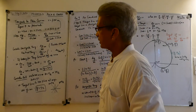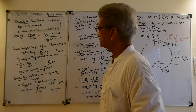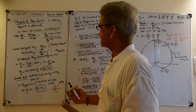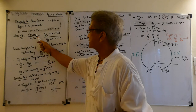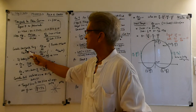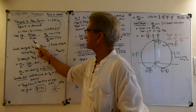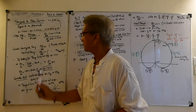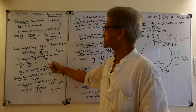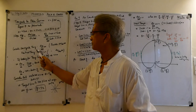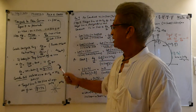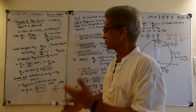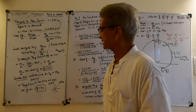Now we're going to locate the horizontal tangents and the vertical tangents. For a horizontal tangent, you have to set the numerator (dy/dθ) equal to zero, provided the denominator is not zero. And for the vertical tangent, you have to set the denominator (dx/dθ) equal to zero, and make sure that the numerator is not zero — because zero divided by zero doesn't make any sense.